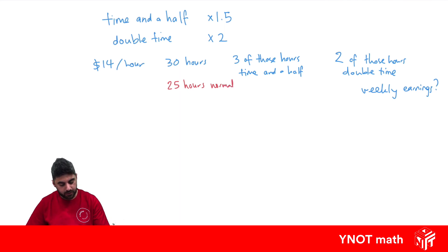So to work out our total weekly earnings, we're going to have to break it up into our normal, our time and a half, and our double time. So for the normal 25 hours, that's just going to be 14 times 25.